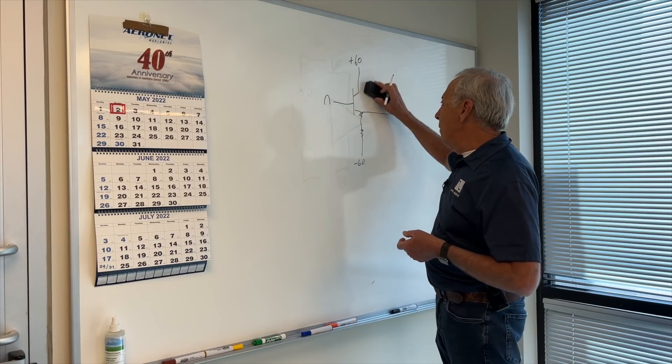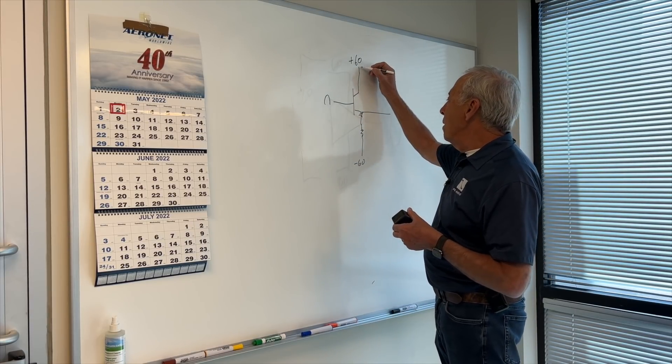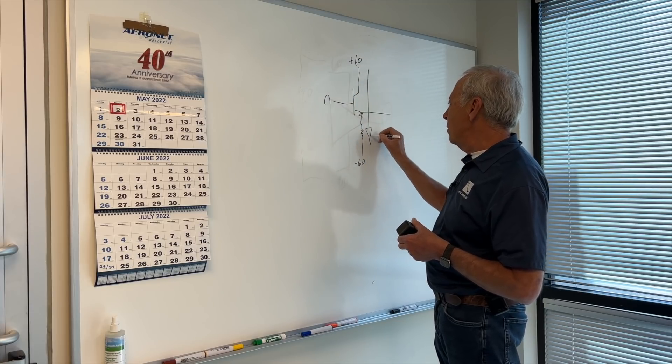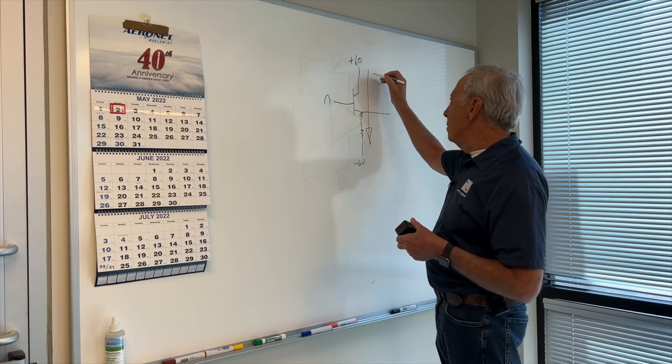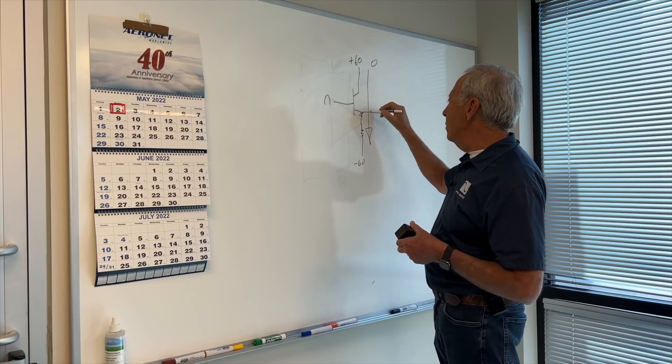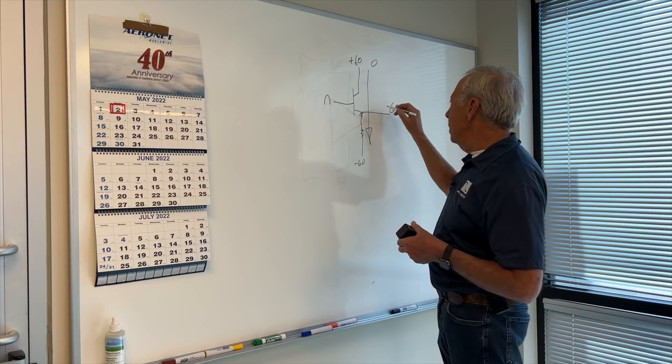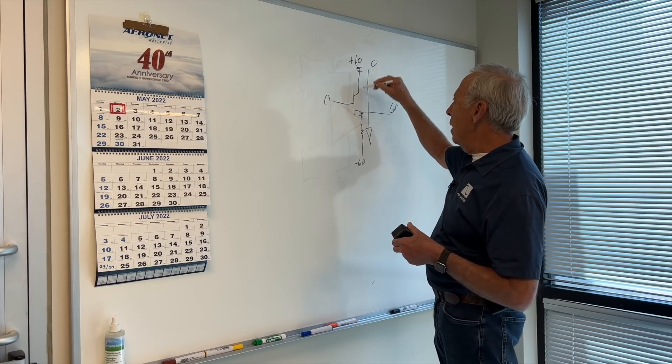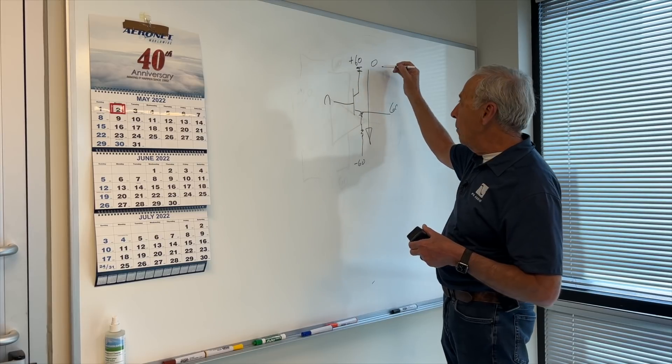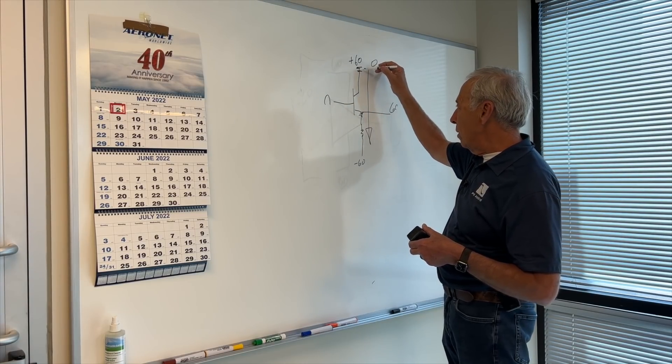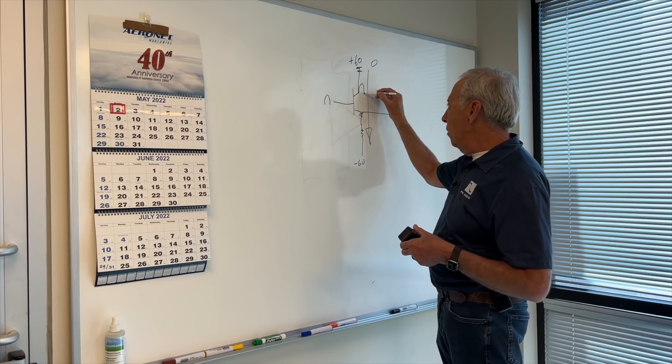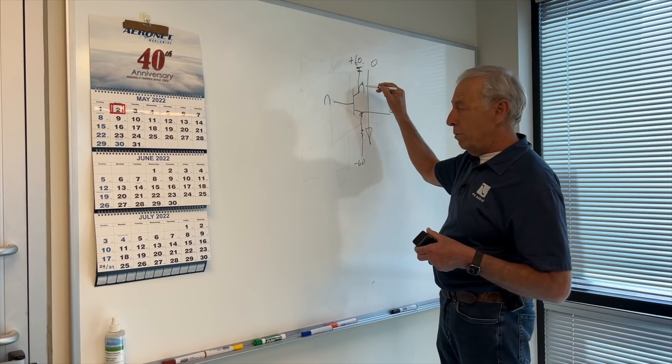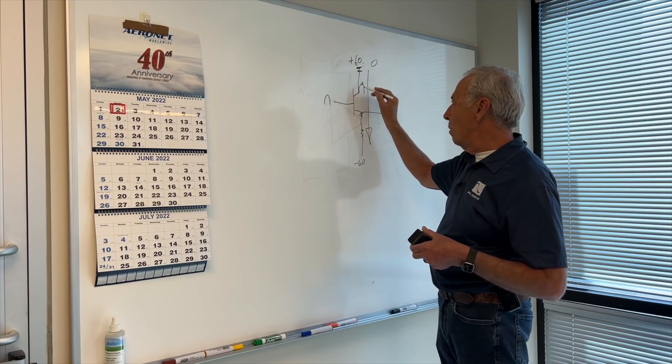If we're producing 60 volts, then the drop across this transistor is zero. So if this is outputting 60, then this point is sitting pretty much up here. That's how it's pulling up, and we have very little drop across here. If we're only producing this much, then we've got, say, a 40 volt drop across this, we have maybe a transistor up here.